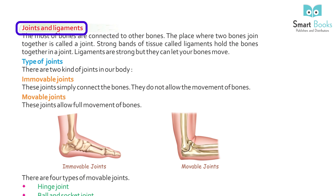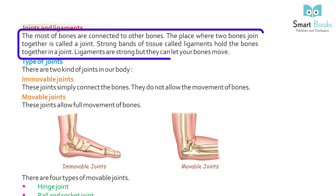Joints and Ligaments: most bones are connected to other bones. The place where two bones join together is called a joint. Strong bands of tissue called ligaments hold the bones together in a joint. Ligaments are strong but they can let your bones move.